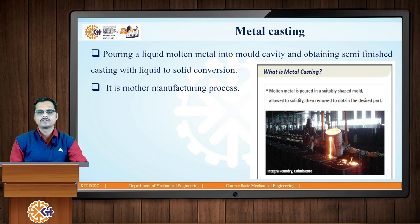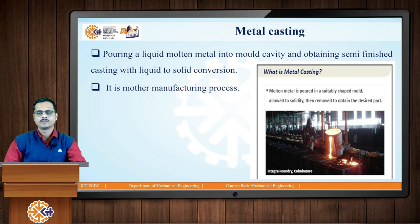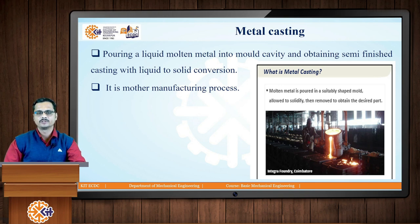Metal casting is the mother manufacturing process. It is the oldest near net shape manufacturing process, and by birth all we are casters. Metal casting is the manufacturing process which deals with pouring of liquid molten metal into a mould cavity and obtaining a semi-finished casting with the help of liquid to solid conversion.